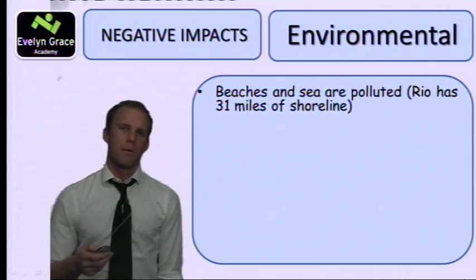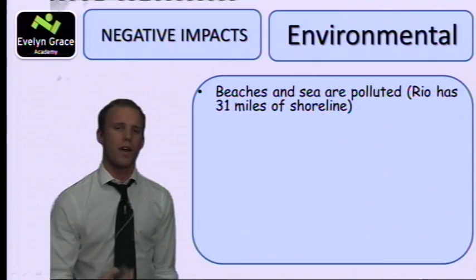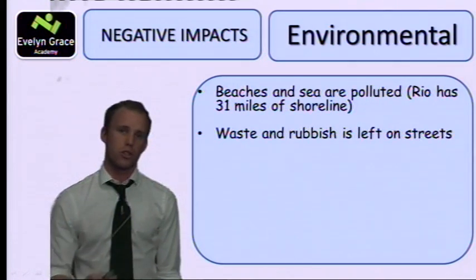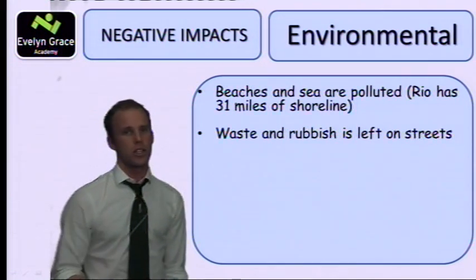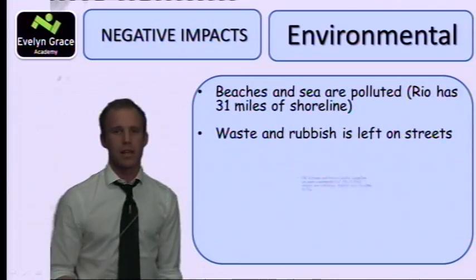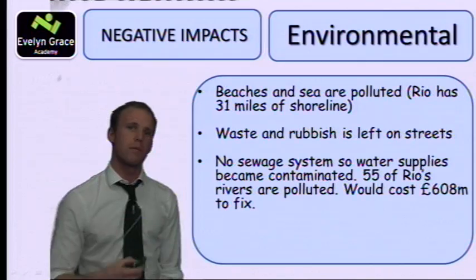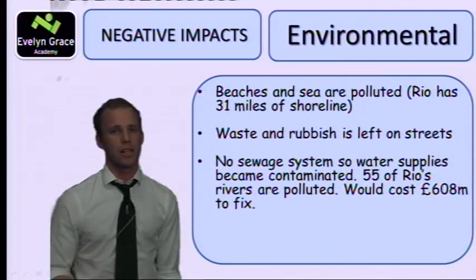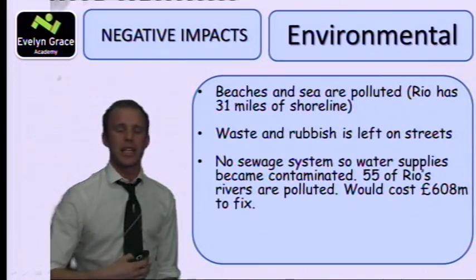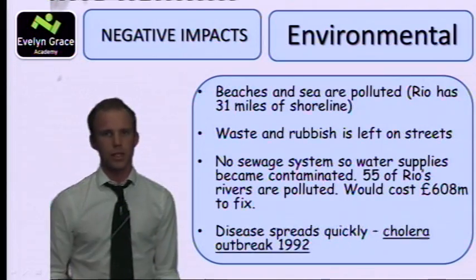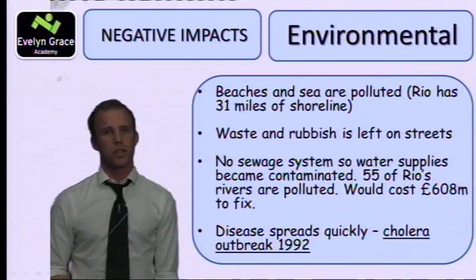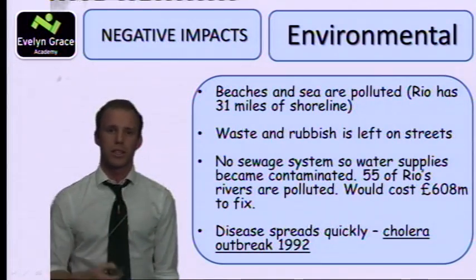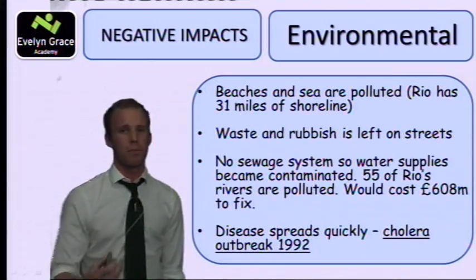Most of the beaches and sea around Rio are polluted — sewage goes straight out into the sea, and Rio has 31 miles of shoreline polluted. Waste and rubbish are left in the streets; in favelas there's no litter collection or sewage works. Disease spreads easily with no sewage system, so water supplies can become contaminated. 55 rivers are polluted and it would cost £608 million to fix — too slow to accommodate all the people moving in. There was a cholera outbreak in 1992, showing how environmental pollution causes social impacts.